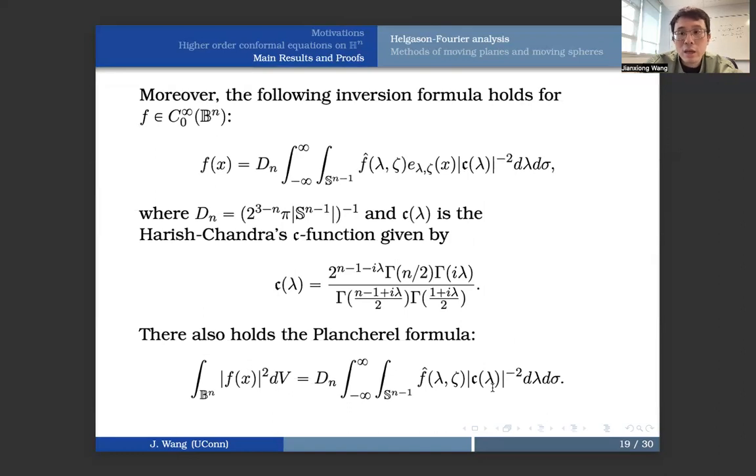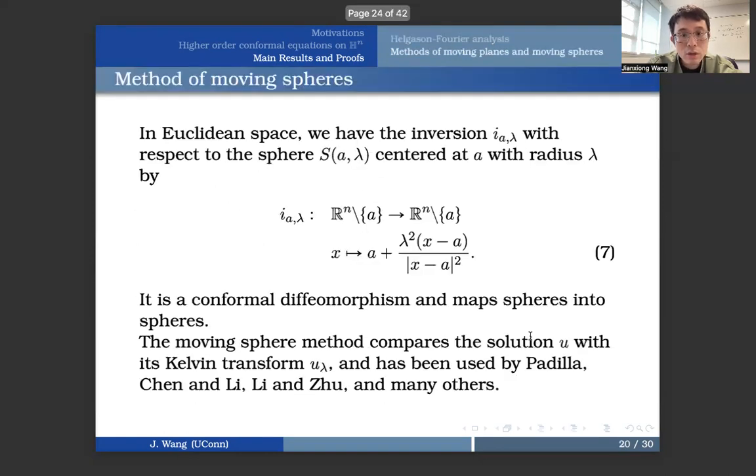which looks like this. So formally, you can define the Fourier transform of a function f on Hn, particularly with this ball model, by f hat being equal to the integral on the Poincaré ball f of x times this eigenfunction, provided this integral exists. Moreover, there are many parallel results regarding this Helgason-Fourier analysis on hyperbolic space. For example, we have the inversion formula and the Plancherel formula. They both hold for Fourier transform on hyperbolic space.